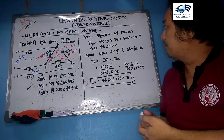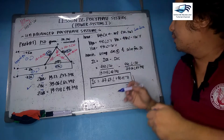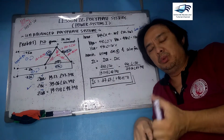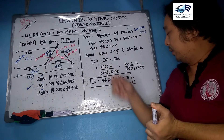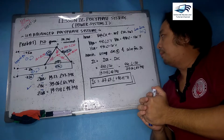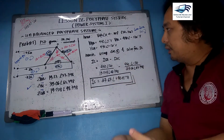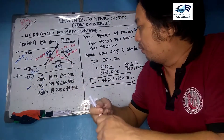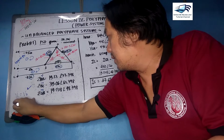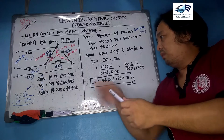For assumption, we use the line-to-line voltage as reference with ABC positive sequence. So VAB = 440∠0°, VBC = 440∠−120°, and VCA = 440∠+120°. In a delta-connected load, the phase voltage equals the line voltage, so VAB = VAB (capital letters), and similarly for BC and CA.